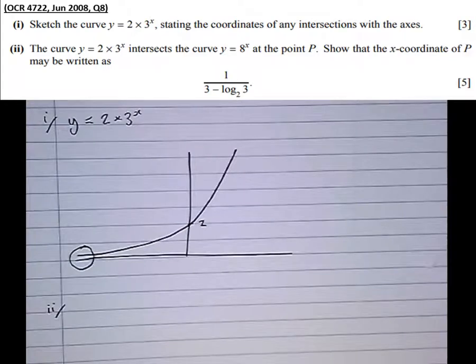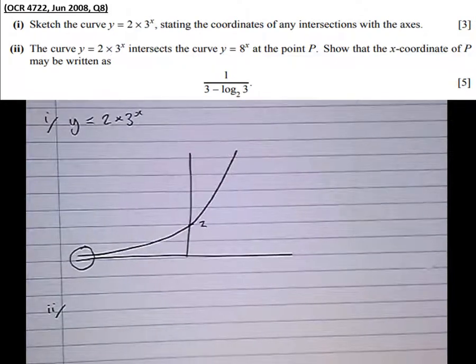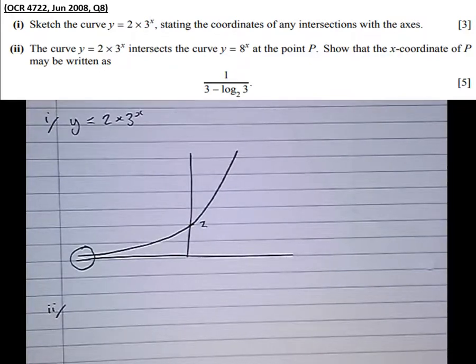Part 2: The curve y equals 2 times 3 to the x intersects the curve y equals 8 to the x at the point P. Show that the x-coordinate of P may be written as 1 over 3 minus log to the base 2 of 3.